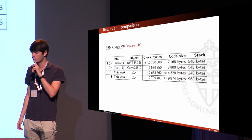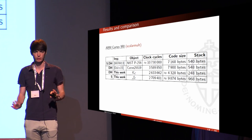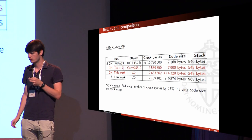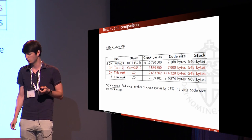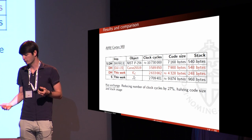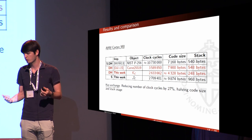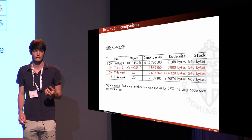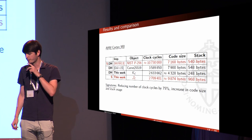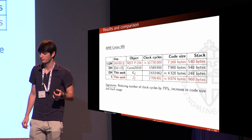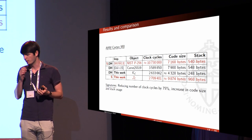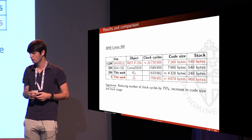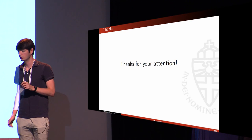On the ARM Cortex-M0, again comparing scalar multiplication: for key exchange against the fastest Curve25519 implementation by Dull et al., we reduce clock cycles by 27% and halve both code size and stack usage. For signatures against Werner, Unterlugauer, and Wenger, we reduce clock cycles by 75%, though we do increase code size and stack usage. Thank you for your attention.